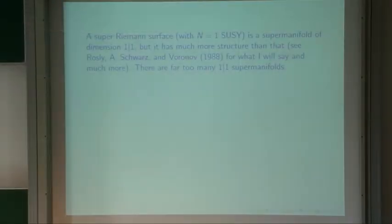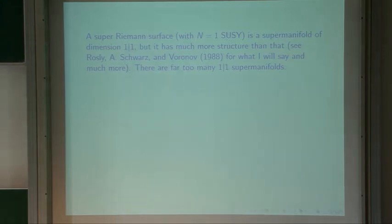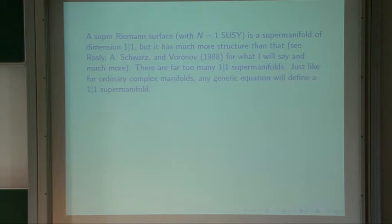A super-Riemann surface is a complex manifold of dimension 1|1 — that means one even and one odd complex dimension. But it has much more structure than just a complex manifold of dimension 1|1. Those are a dime a dozen. For example, let's define some complex manifolds of dimension 1|1 that aren't super-Riemann surfaces.